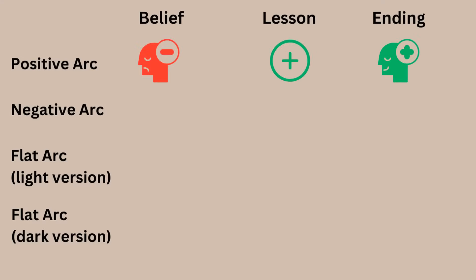We're going to go more in depth on those four components later on, but for now let's quickly go over the types of arcs. You've probably heard about positive arcs, negative arcs, and flat arcs. These arcs all have the same four components — even though they function differently, they're all made up of those same four components. The positive arc: the belief the character starts with is negative, the lesson they're presented with is positive, and they accept that lesson. The character grows and becomes a better person; the ending is positive. This is by far the most common type of arc. The negative arc: the belief the character starts with is positive, the lesson is negative, and they accept it. The character becomes a worse person; the ending is negative.